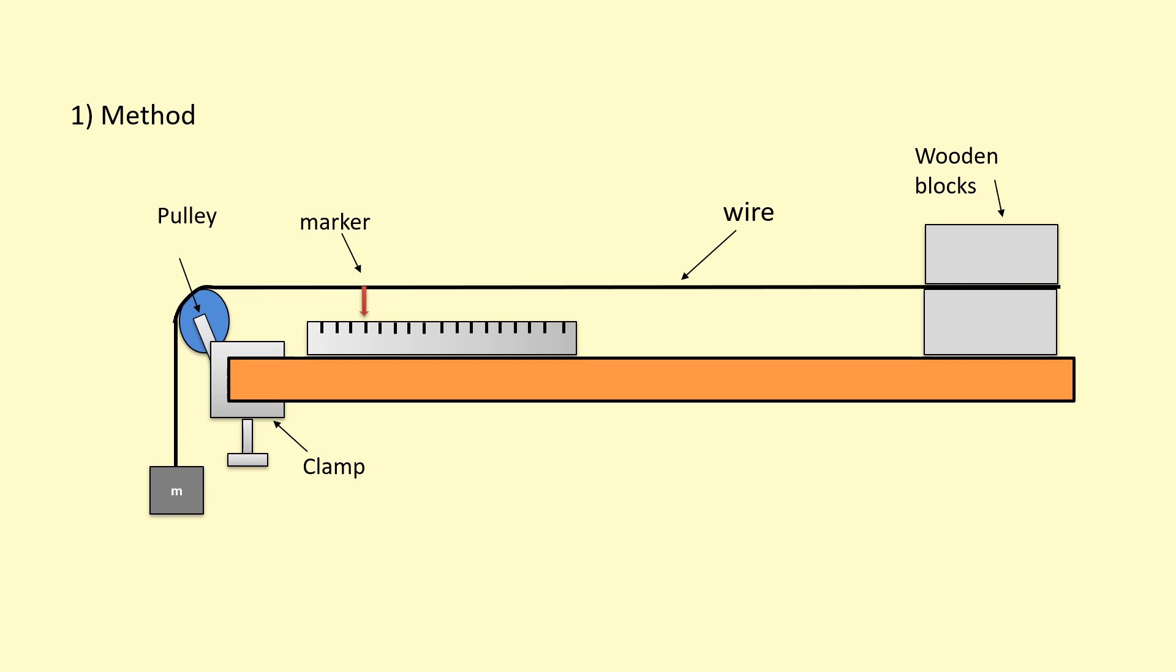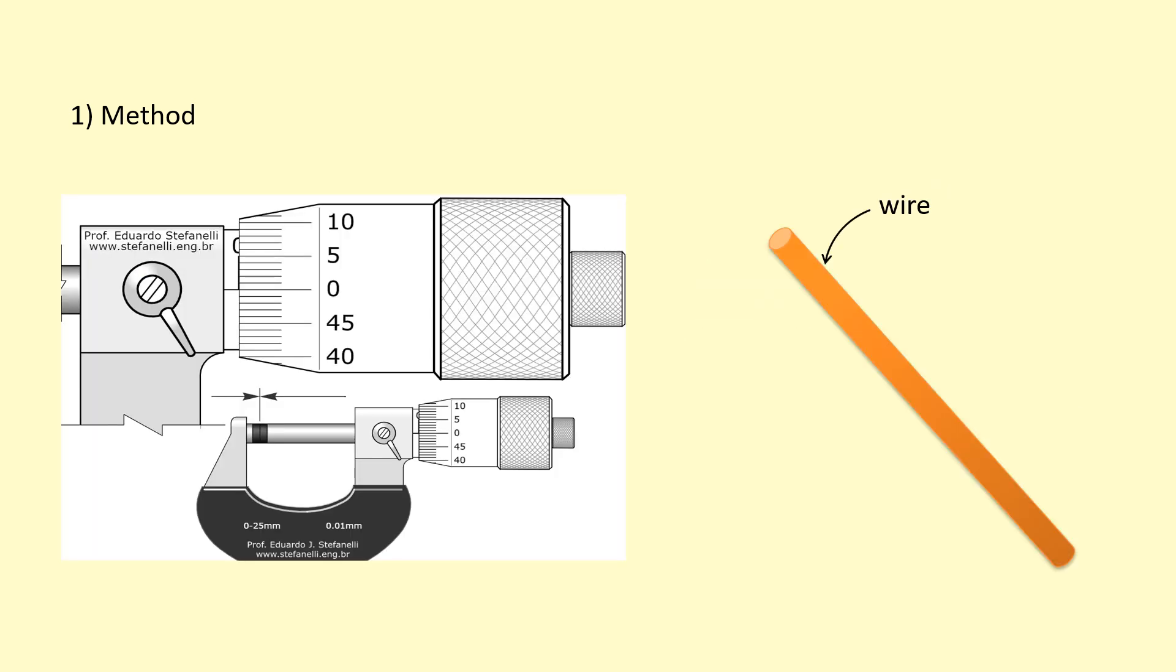Before you even start this practical you need to measure the diameter of the wire. First of all get your micrometer, close the jaws of the micrometer, and ensure that it's reading zero so you're checking for zero error.